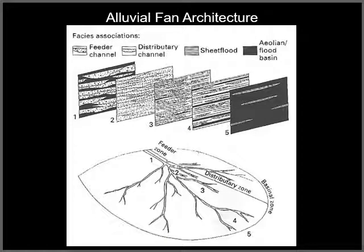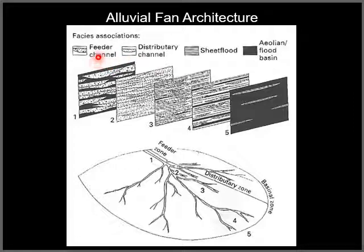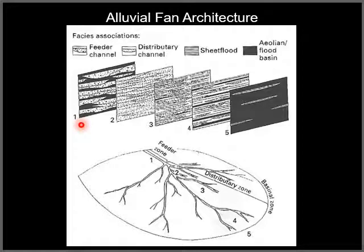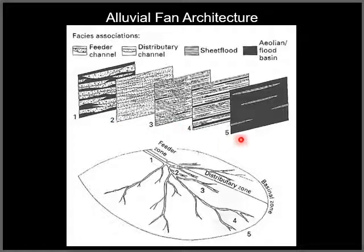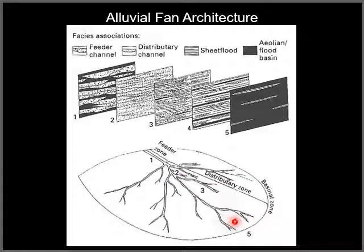Further on alluvial fan architecture, we have the facies associations. The symbols show feeder channel, distributary channel, sheet flood, and aeolian flood basins. We have a series of sections showing the changes from the fan head to the fan front or the edges of the fan — sections one through five — illustrating the changes in the stratigraphy and the facies involved in the alluvial fan architecture.